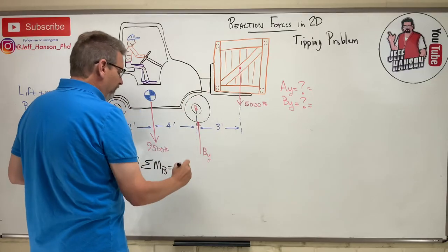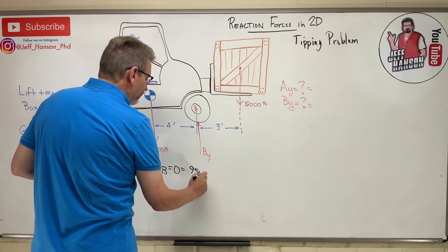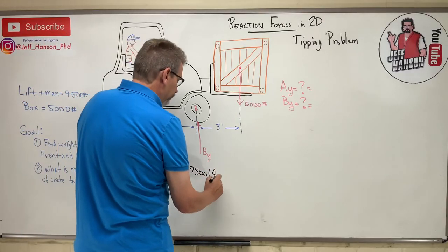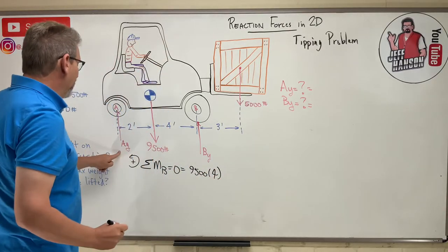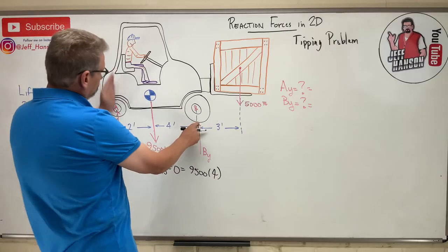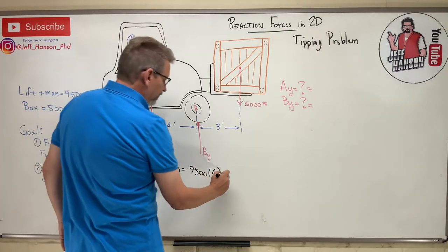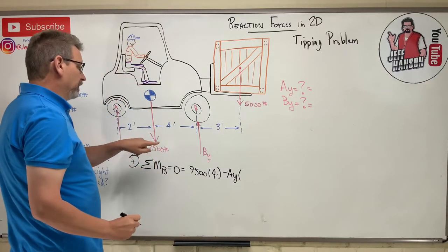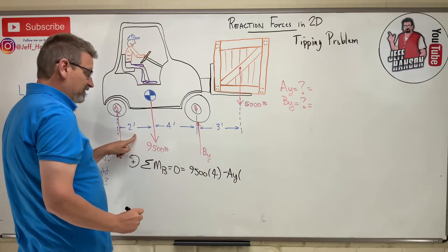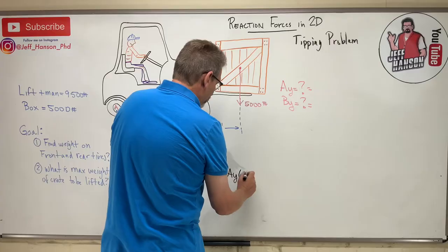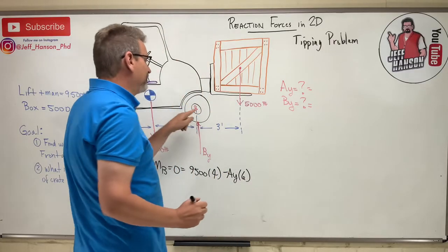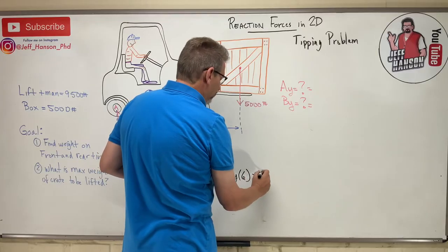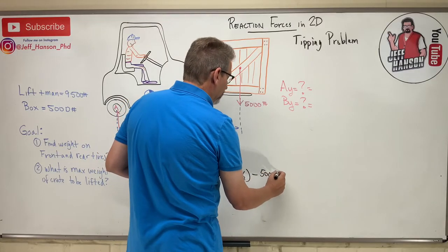Okay, so I'll take the moment here at B. Okay, so I have the 9,500 which rotates me, that's positive, right? 9,500 times how far away? 4. And then I got Ay which rotates me, oh that's negative, minus Ay times 4 plus 2 is 6 away from B, right?